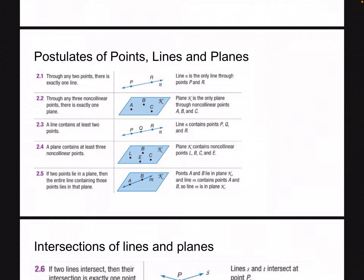Postulate 2.1 says that through any two points, there is exactly one line. Make sure you get that into your notes — through any two points, there is exactly one line. There are some picture examples you can jot down if you think you need them for later, but most of these make pretty good sense.